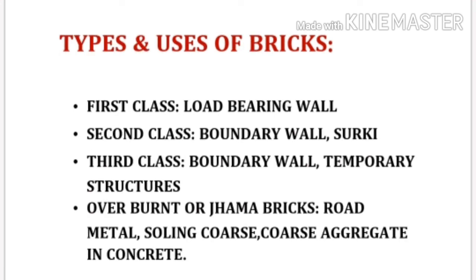Types and uses of bricks: There are four types — first class, second class, third class, and overburnt or jama bricks. First class bricks are used for load bearing walls. Second class bricks are used for boundary walls and surkhi. Third class bricks are used for boundary walls and temporary structures. Overburnt or jama bricks are used for road metal, soiling courses, core aggregate in concrete, etc.